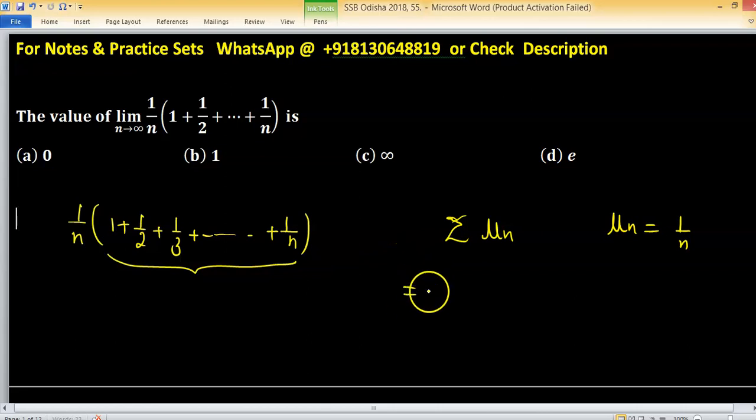So this expression is nothing but summation un, or I can write u1 plus u2 plus and so on un upon n, and take the limit of this one when n is tending to infinity.